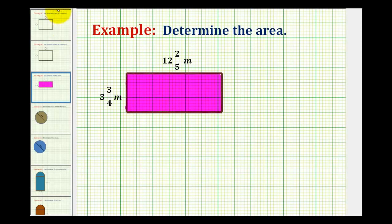The formula to determine the area of a rectangle is length times width. It doesn't matter which of these we call the length and which we call the width. Let's go ahead and call this the length and we'll call this the width. So the area will be the product of three and three-fourths meters and twelve and two-fifths meters. I'm going to leave the units off while we determine this product.